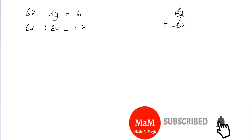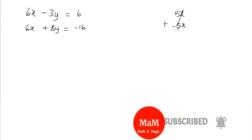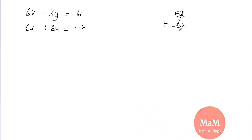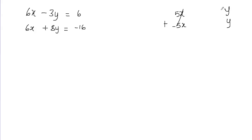Those two terms cancel each other out because they have opposite signs — that's when you add the equations. When you subtract, you should have the same coefficient with the same sign. For example, if you're looking at the y variable and you have 7 in the first equation and 7 in the second, you have the same coefficient with the same signs.